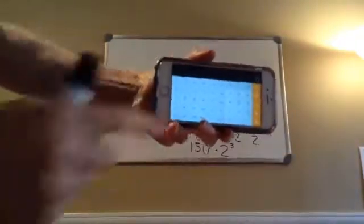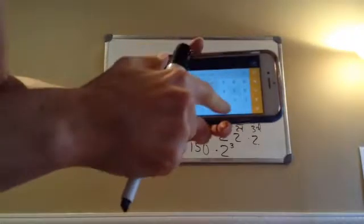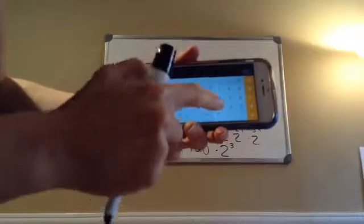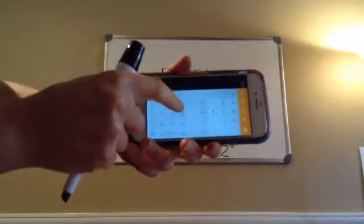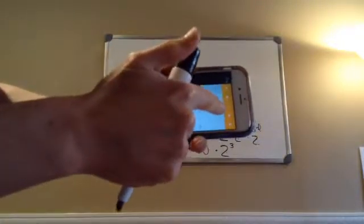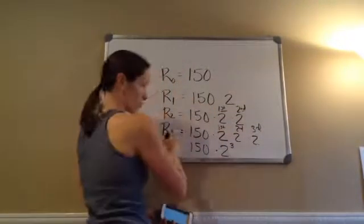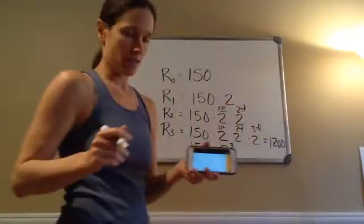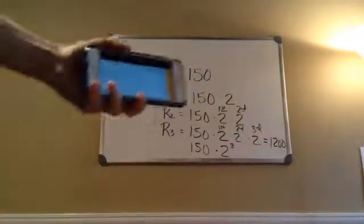I'm going to show you how to do it. So: 150 times, then 2, and on the scientific calculator you do the x-to-the-y key — and it's to the 3rd power — equals 1,200. So after three years, they have 1,200 bunnies. That's how that works.